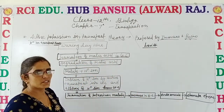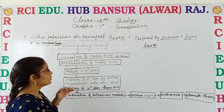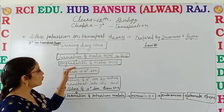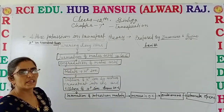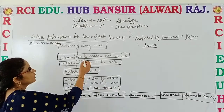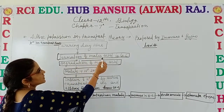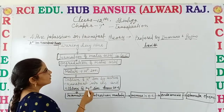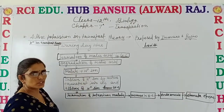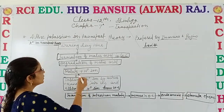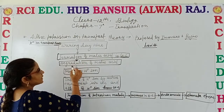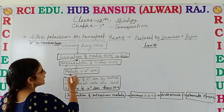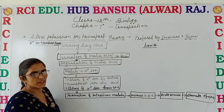The theory states that the opening and closing of the stomata is dependent on the formation of malic acid. As we know that during the daytime, formation of malic acid takes place in the guard cell, because photosynthesis takes place during the daytime. This malic acid degrades or dissociates into malate plus H+ ions.